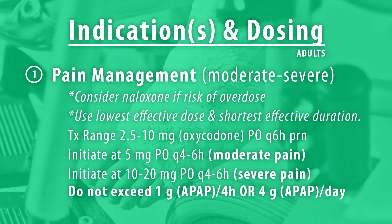Indications and dosing for adults: before going over the main indication, a couple of key notes — consider naloxone if there is a possible risk of opioid overdose or accidental ingestion, and use the lowest effective dose as well as the shortest effective duration. The main indication is moderate to severe pain management. When initiating dosing, it is based on the oxycodone component. The general range is 2.5-10mg of oxycodone by mouth every 6 hours as needed.